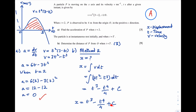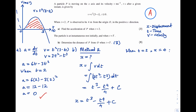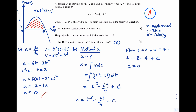To find the constant of integration, we use the condition that when t = 2, x = 4. Substituting into x = t³ - t⁴/4 + c: 4 = 8 - 4 + c, hence c = 0. Therefore the displacement equation is x = t³ - t⁴/4.